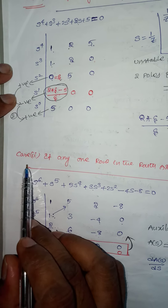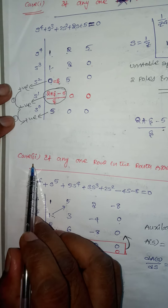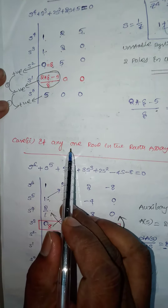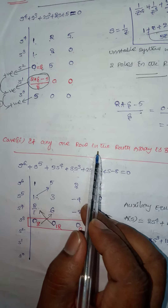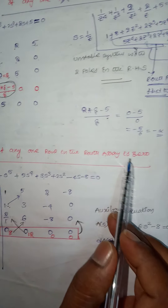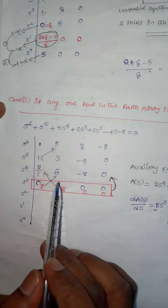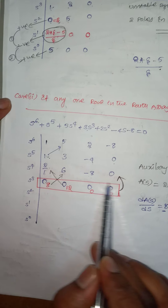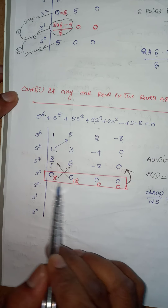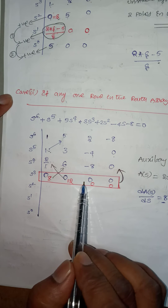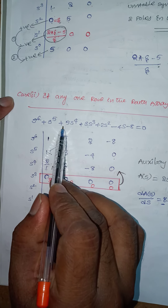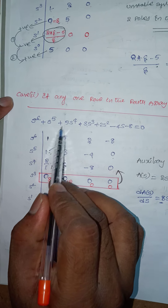Next special case — Case 2: if any one row in the Routh array is entirely zero, that means the complete total row becomes zero. For this type of characteristic equation, this situation arises.